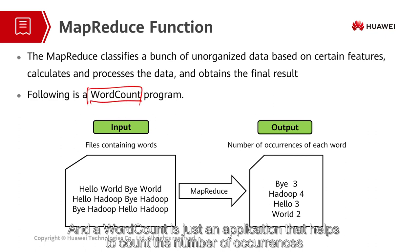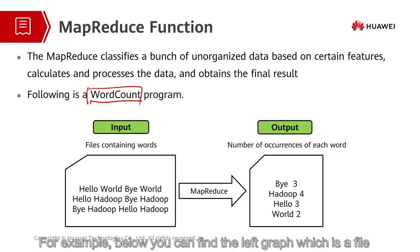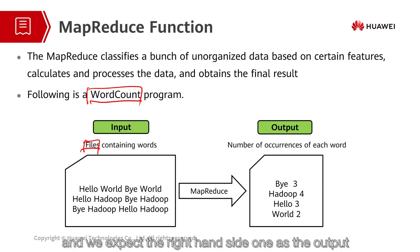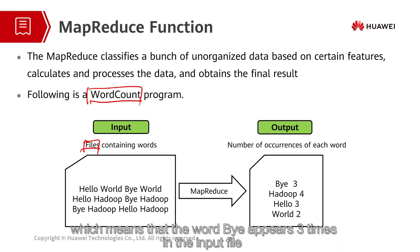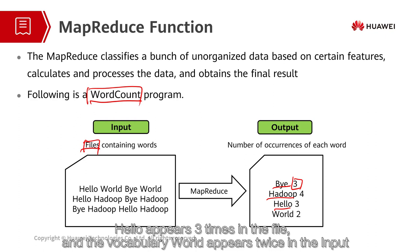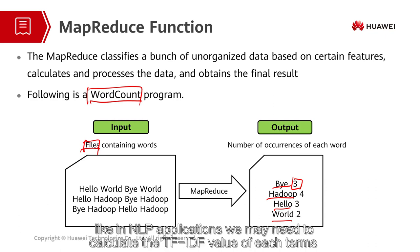A WordCount program is an application that helps to count the number of occurrences of each word in the file, or namely the term frequency. For example, in the left graph you can find a file that contains some unorganized sentences as the input data. We expect the right-hand side as the output, which means that the word 'by' appears three times, 'Hadoop' appears four times, 'hello' appears three times, and the word 'world' appears twice in the input. With the result, we can further do some data mining processes, like in NLP applications where we may need to calculate the TF-IDF value of each term.